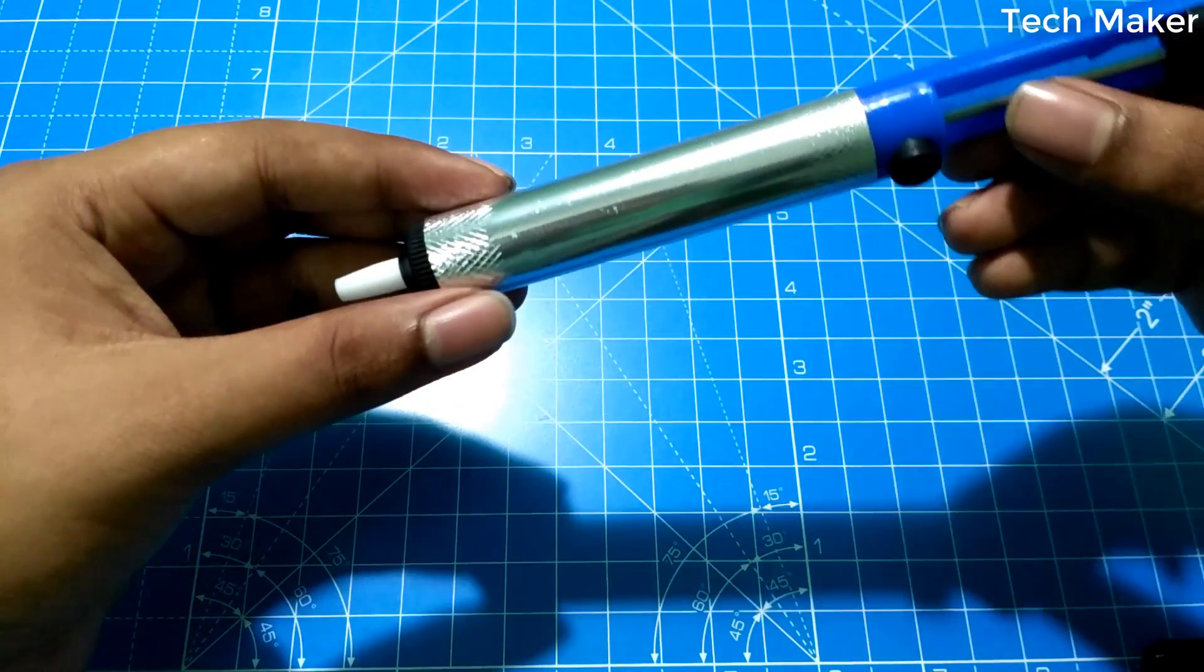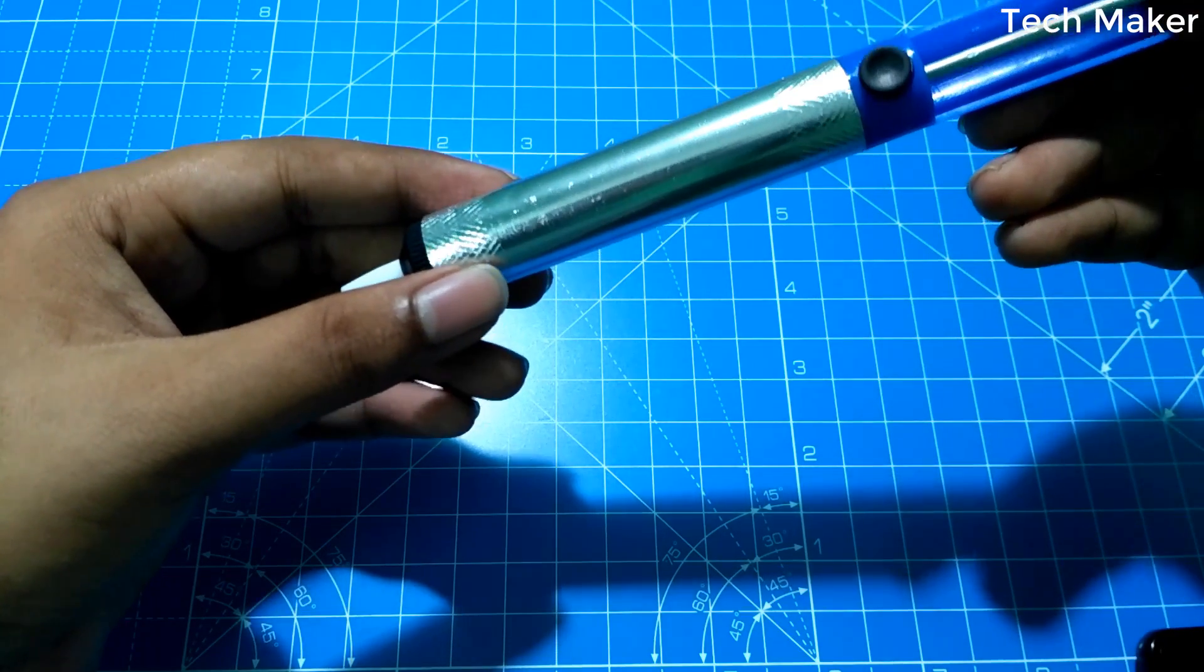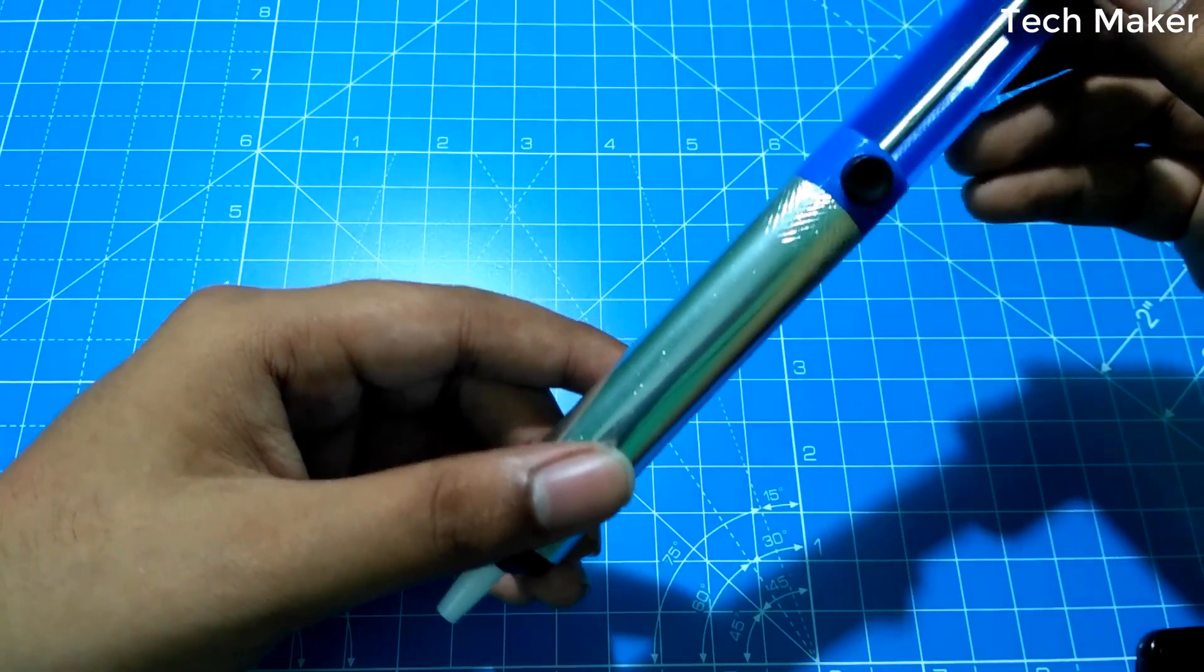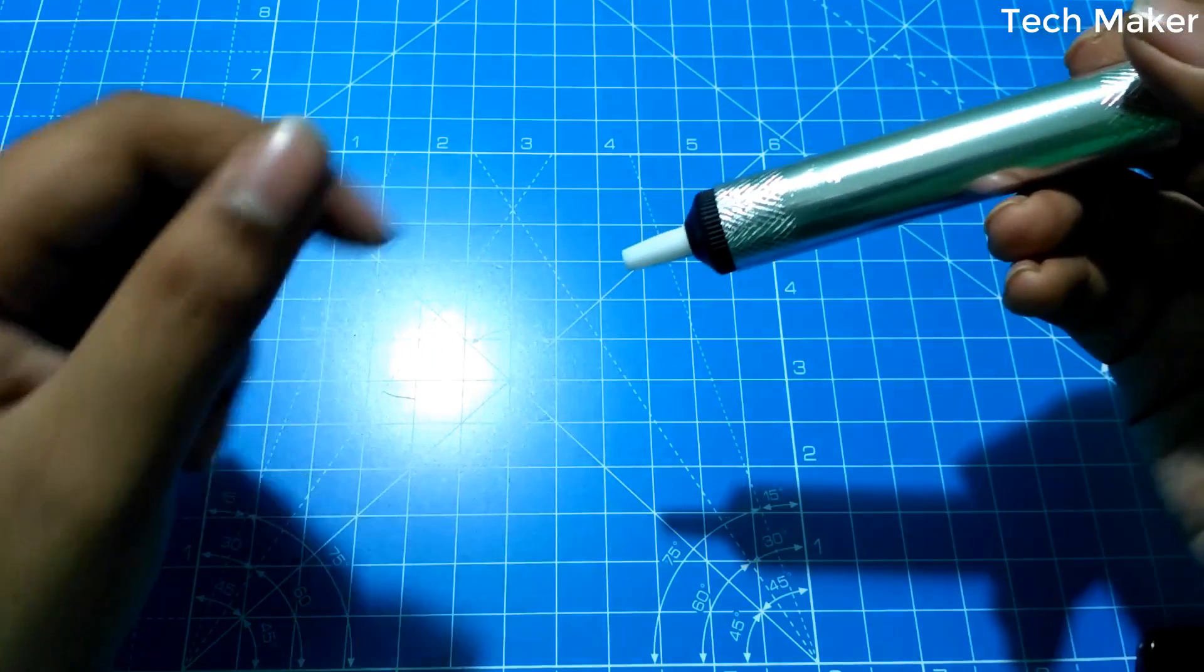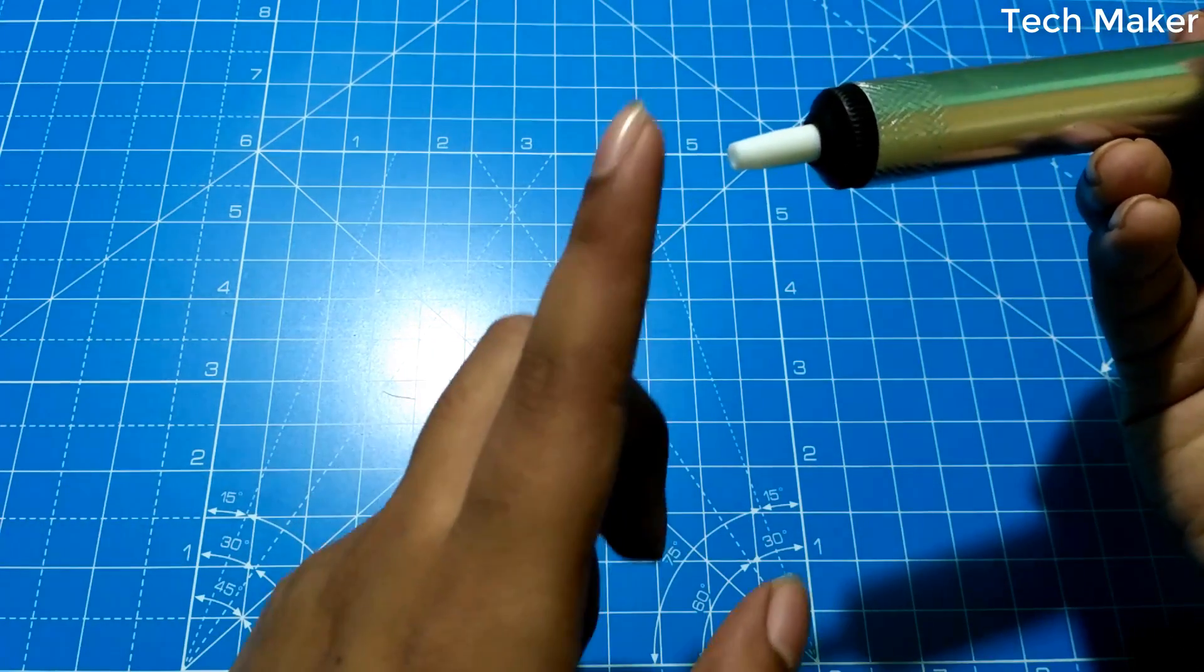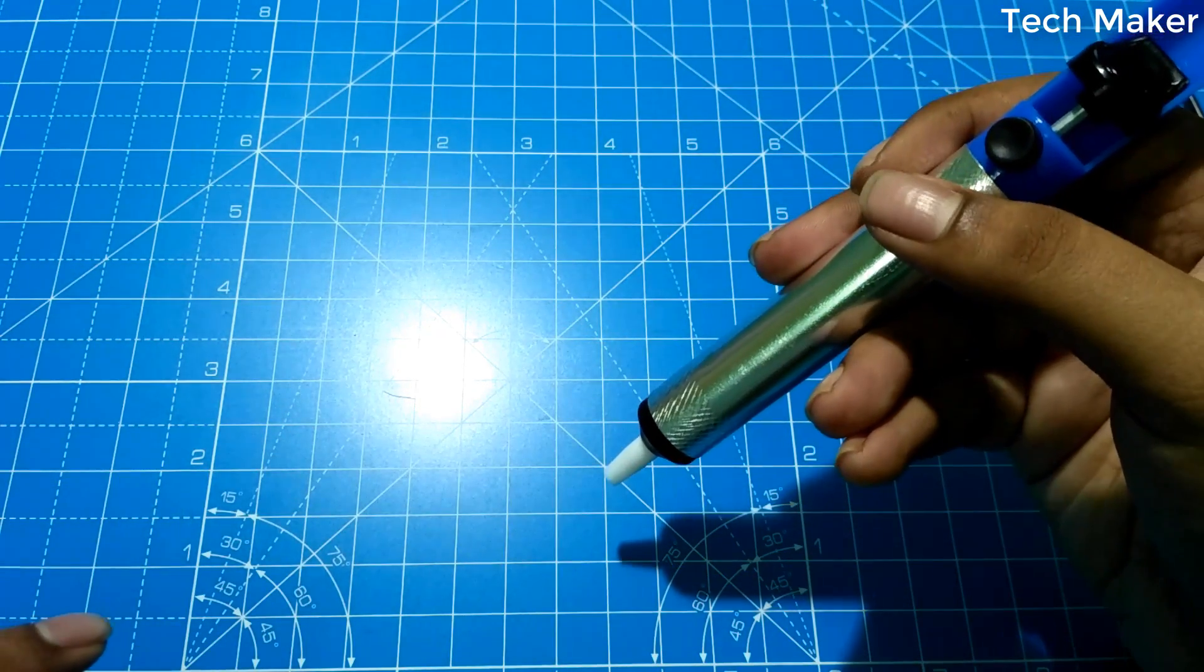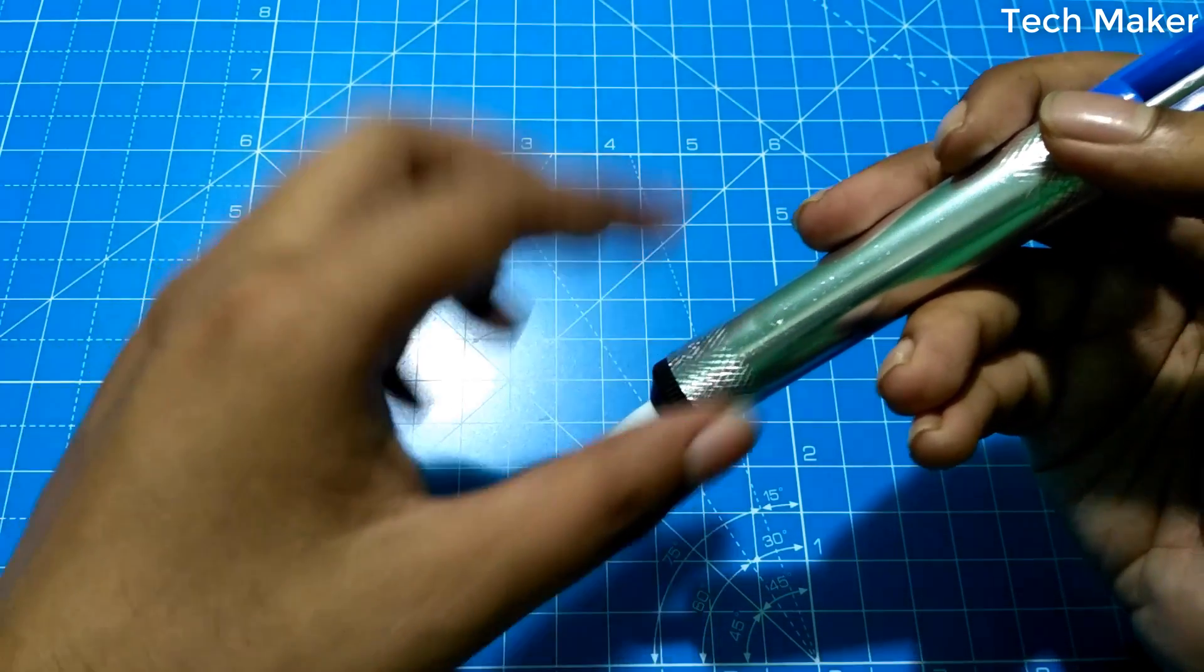Here you can also get this desoldering pump. How do you use it? You have to push like this. When the solder is melted, you need to place this point on the melted solder and press this button. So that it sucks the solder into this chamber.